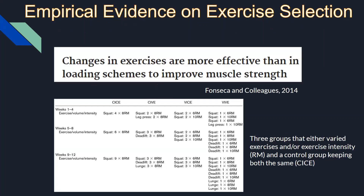This was an interesting study conducted by Fonseca and colleagues in 2014, where they had four groups. One group was a control which did not change or vary exercises nor intensity. However, the other three groups either changed exercise, or intensity, or both. The VIV group changed exercises between squats, leg press, deadlifts, and lunges, as well as changed their rep max in an undulating fashion.